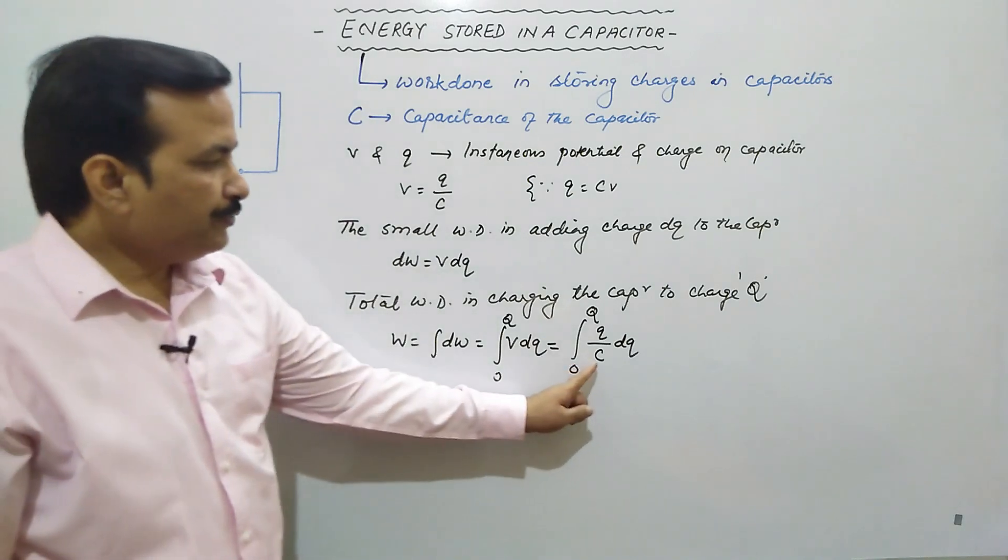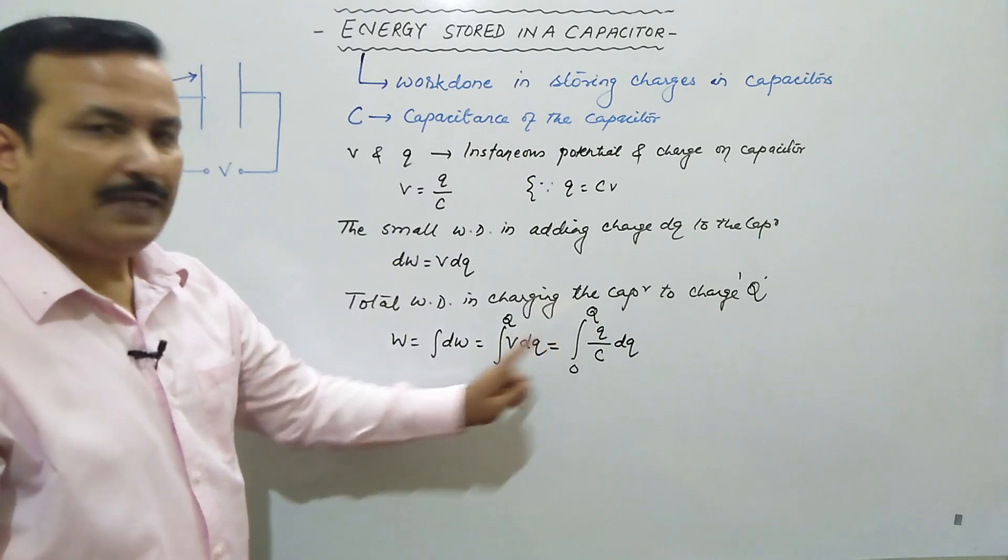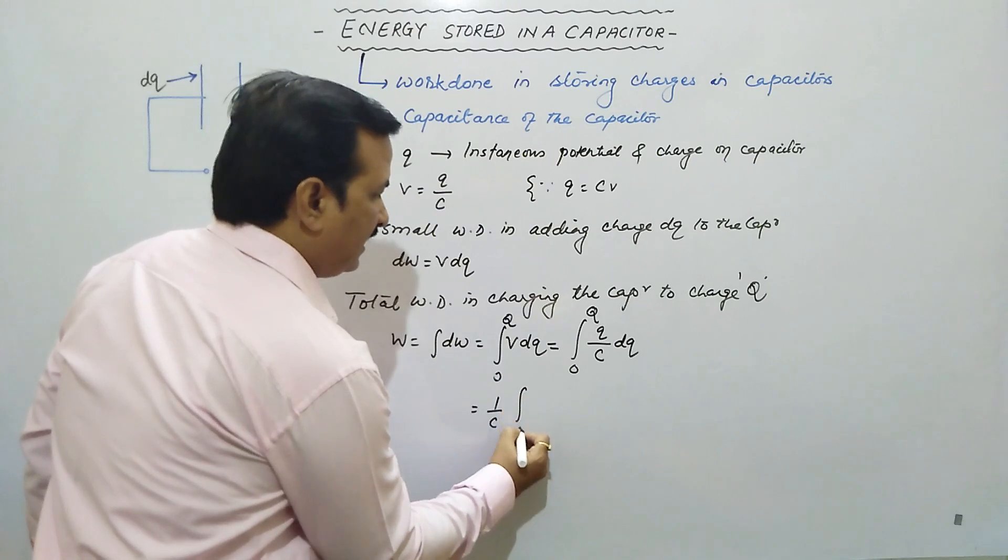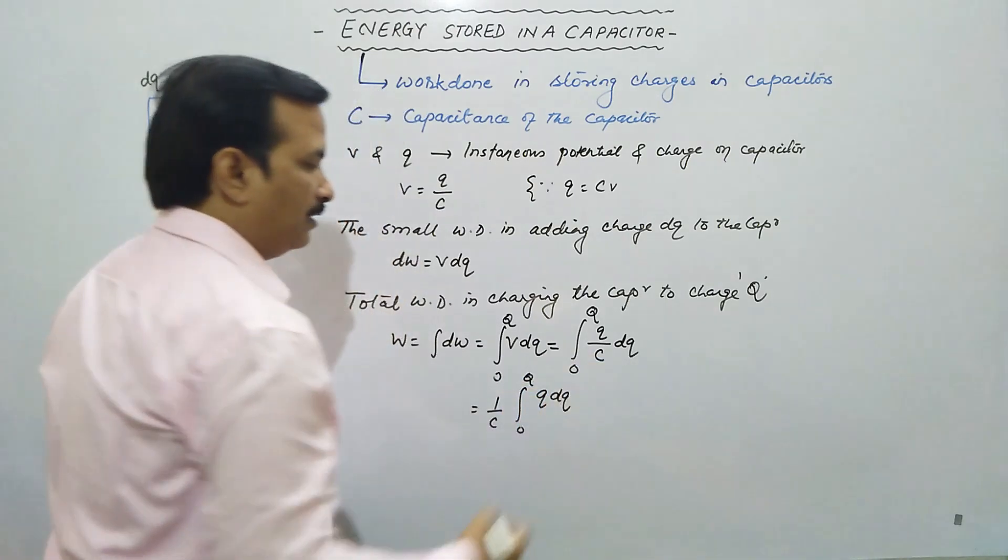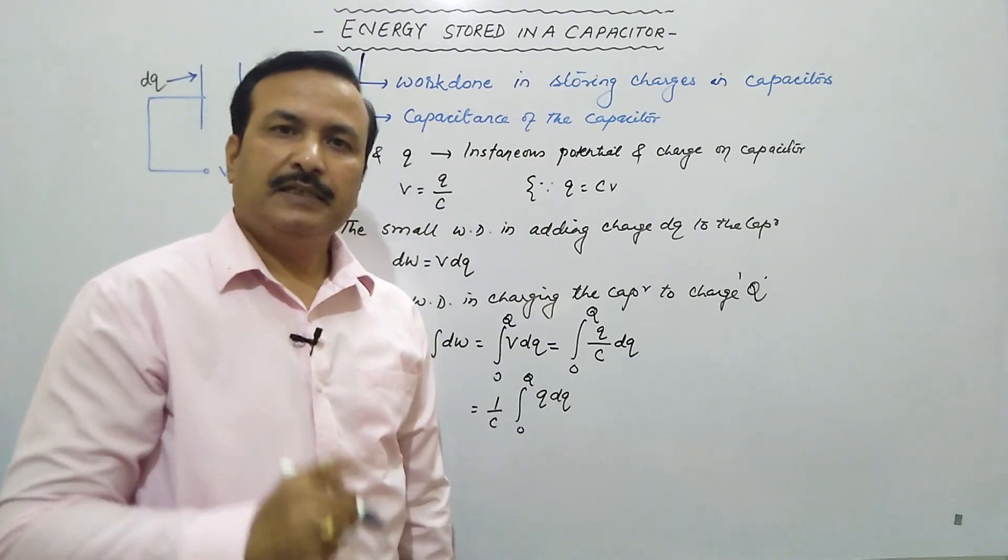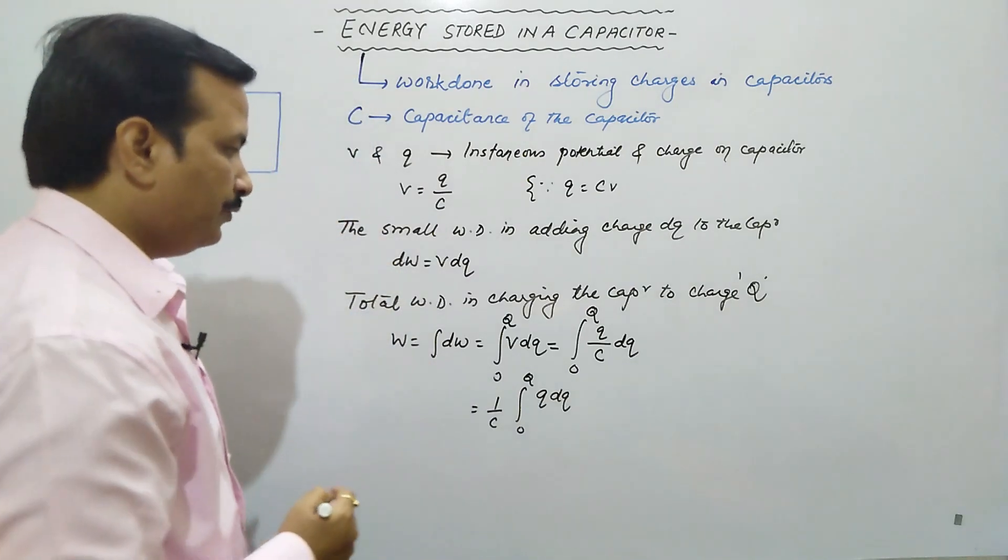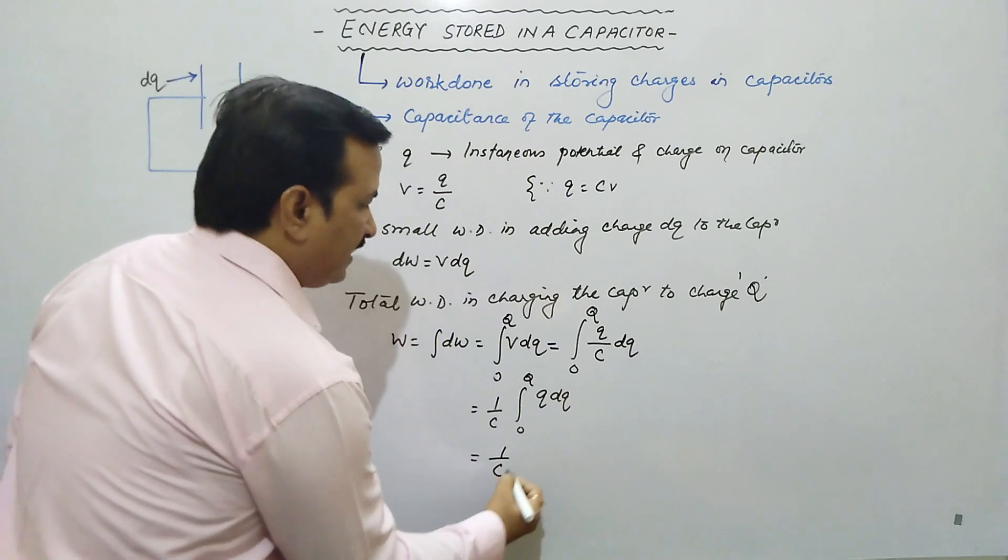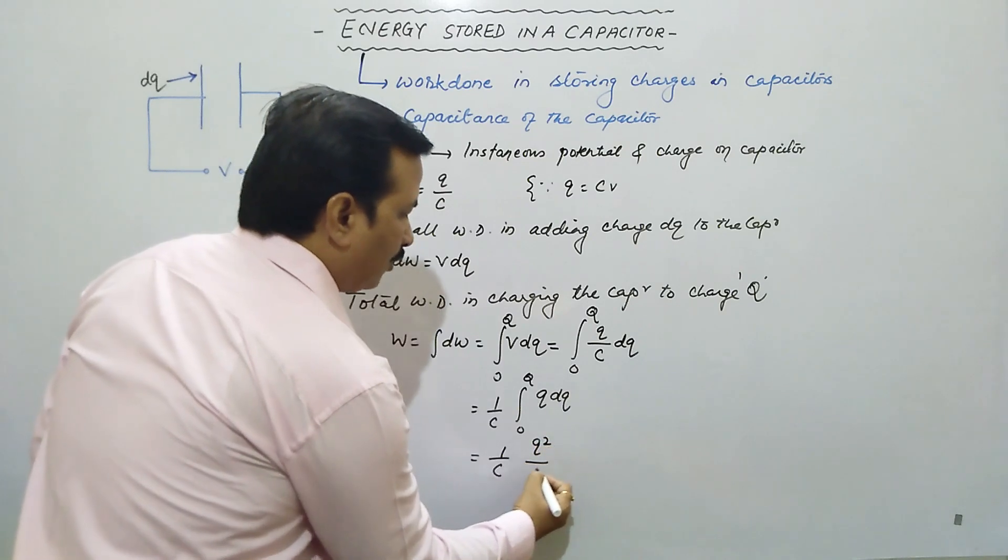Now you see, we can take out 1 by C common. Integration Q DQ. What is the formula for integration? X raise to the power n gives x raise to the power n plus 1 upon n plus 1. Very good. So this we can write 1 by C and integration of this we will get Q square upon 2. Limit is from 0 to capital Q.